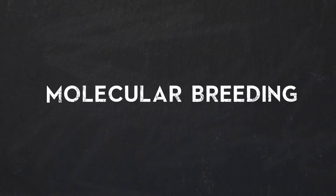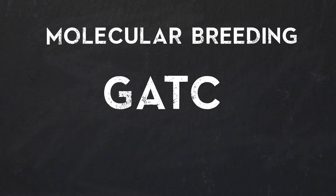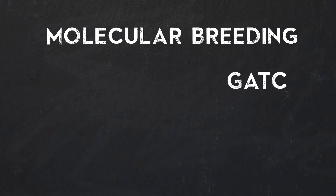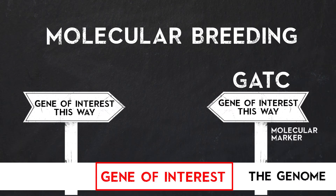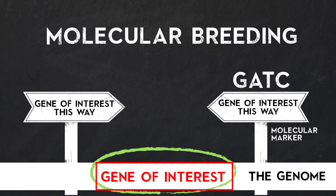A modern plant breeding method referred to as molecular breeding uses the new tools of molecular biology to select desirable traits in plants. Molecular markers are genetic sequences that act as unique signposts in the genome. They are detectable sequences that flank a gene of interest and are so close to the gene that they tend to travel together, offering breeders the ease of using molecular detection techniques to easily select for the desired trait flanked by the marker.